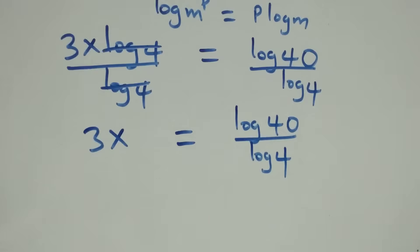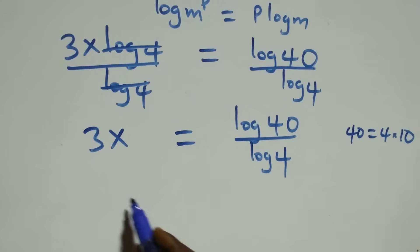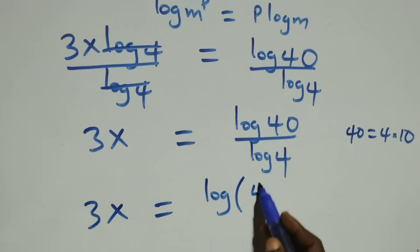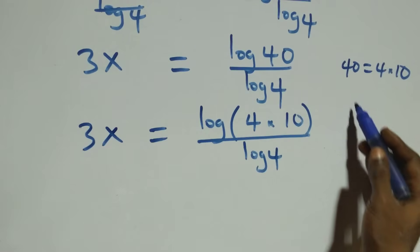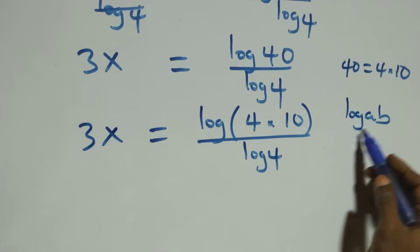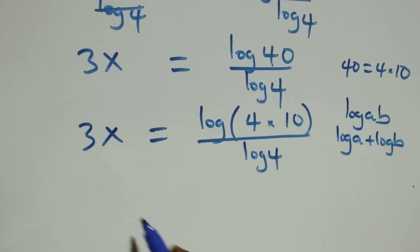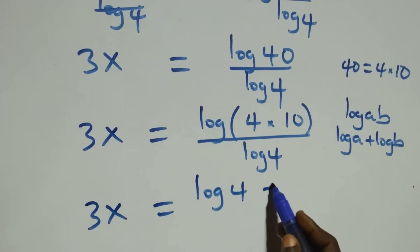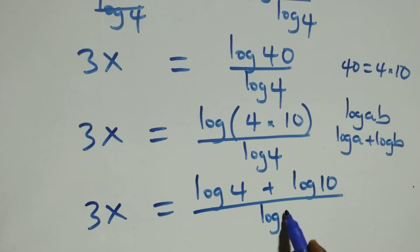Next step: we rewrite forty as four times ten. So what we have becomes three x equals log of four times ten over log four. This follows the log product rule: log of a times b is the same as log a plus log b. So what we have here becomes three x equals log four plus log ten, all over log four.